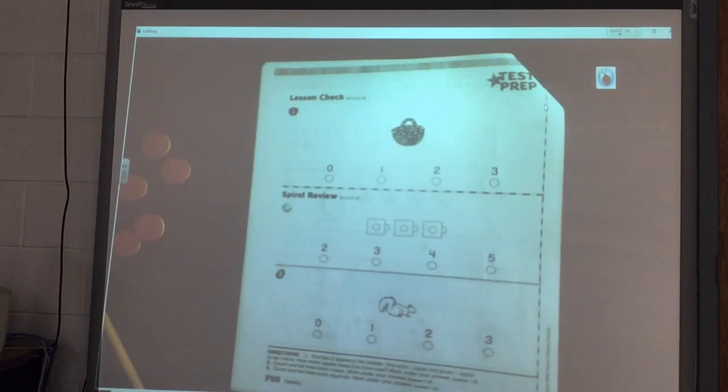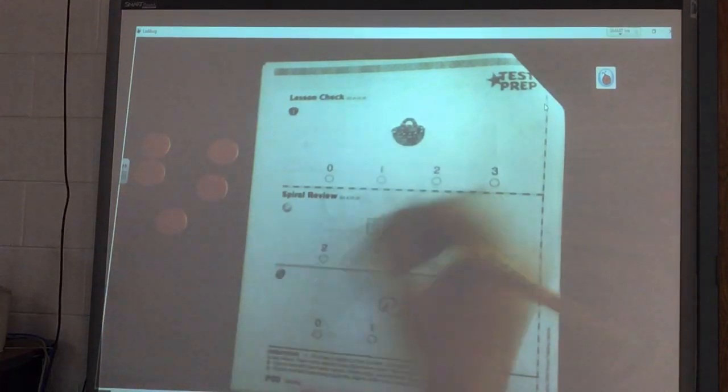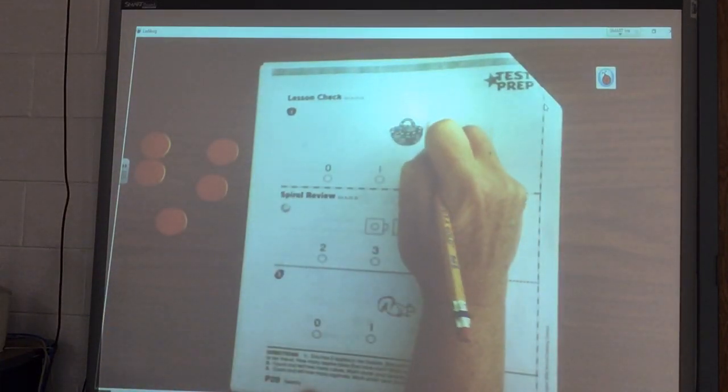Eva has two apples in her basket. She eats one apple and gives one apple to her friend. How many apples does Eva have now? So I'm just going to draw two circles up there for her two apples.